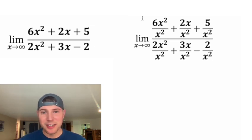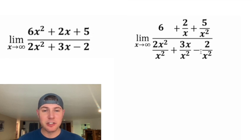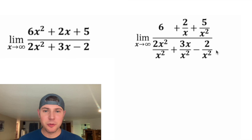And now let's simplify this. The 6x squared over x squared—the x squareds will cancel each other out to just give us 6. And then 2x over x squared, we can reduce the top and bottom by a single x to give us 2 over x. And then 5 over x squared, we'll just leave as 5 over x squared.